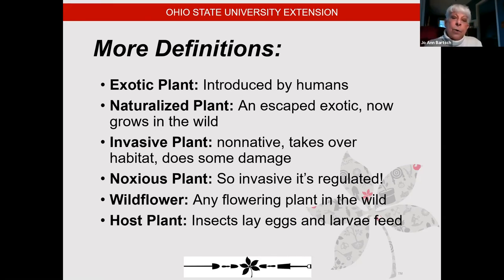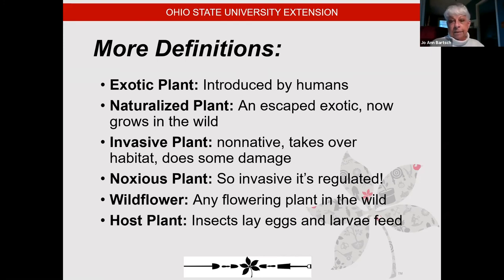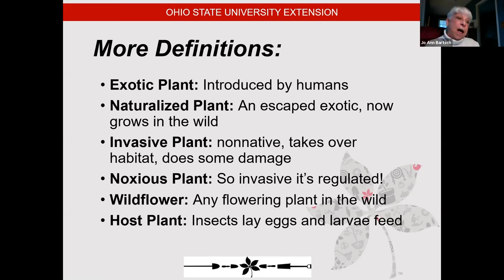In Ohio, invasives and noxious plants are considered synonymous, and there are 37 plants right now on Ohio's invasive plant list. In 2023, it will be 38 when the callery pear makes the list. Those are plants you cannot sell — it's against the law to sell them, propagate them, divide them, distribute them, import them, or disseminate them in any way.